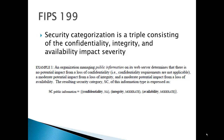Security categorization combines both CIA and this low, moderate, and high categorization in a triplet — meaning for confidentiality you have a particular impact, for integrity you have the impact to integrity, and for availability you have the impact to availability. The example right here from the FIPS publication shows: if there's no potential loss from confidentiality, moderate from integrity, and moderate from availability, then the security categorization is: confidentiality is not applicable, integrity is moderate, and availability is moderate.